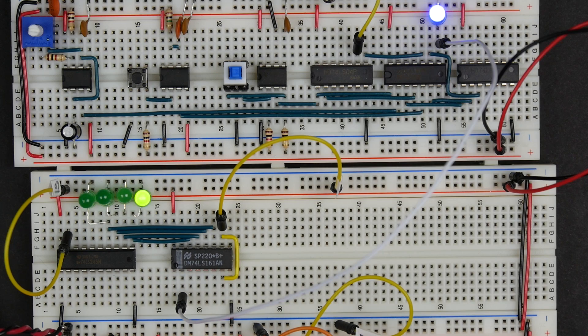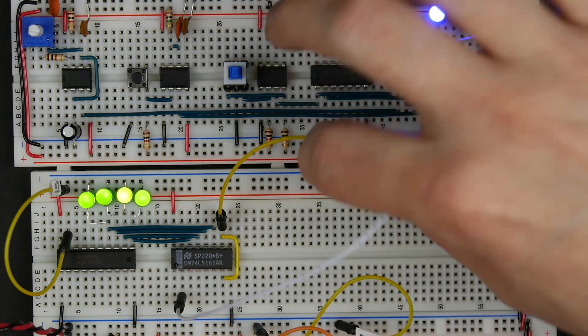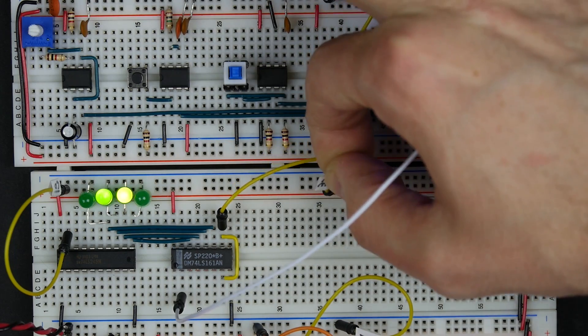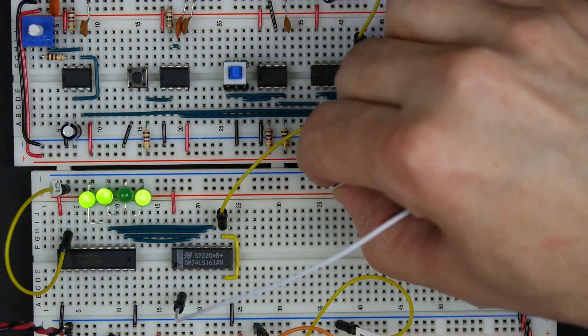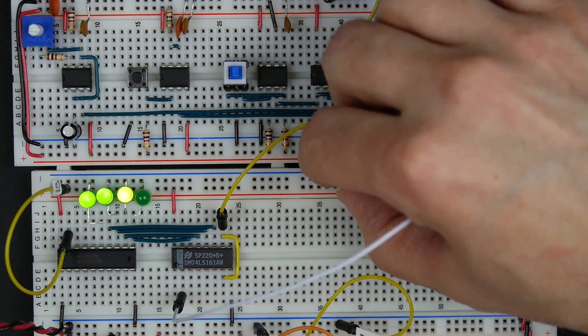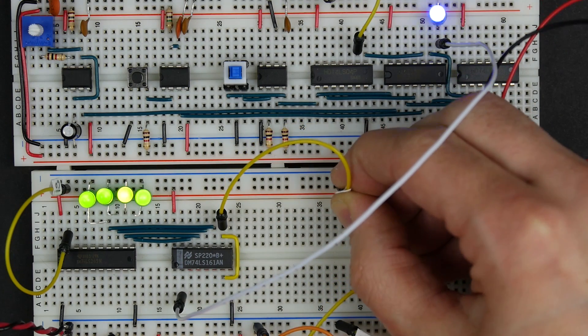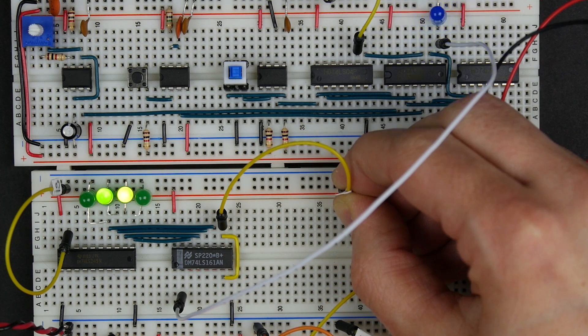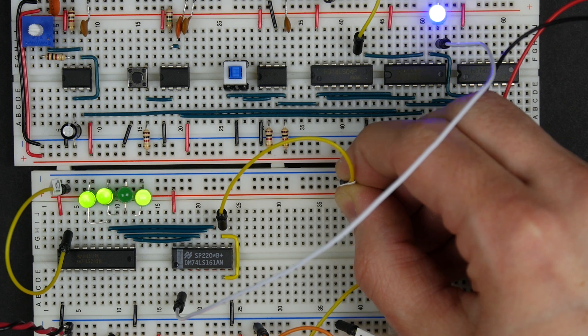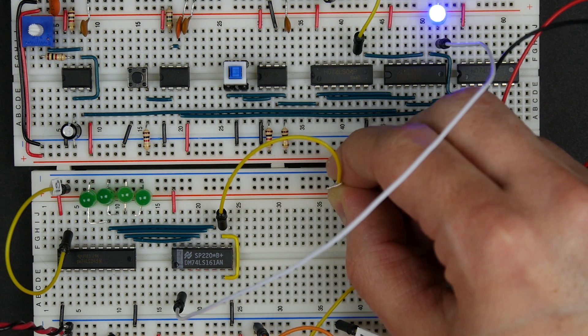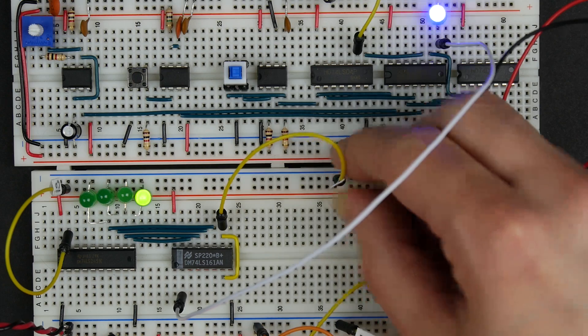If we take our counter enable and we take that low, the counter stops counting. Our clock is still going but the counter has stopped. Then if we bring that high, the counter counts again. If we go low, it stops. So we can control whether the counter is actually counting.